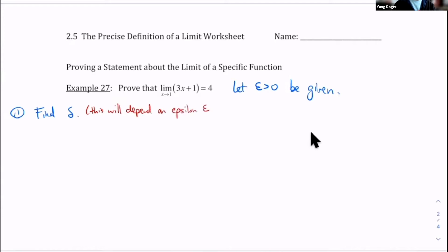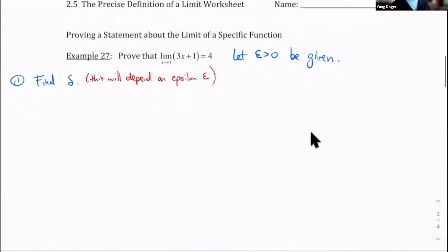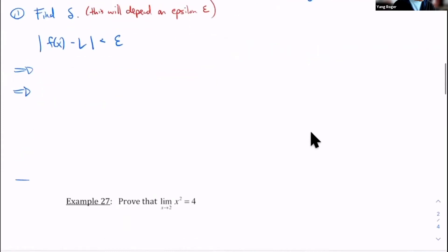So this is our strategy, my friends. We're going to start off with the closeness of the y part first. So we're going to start off with this absolute value of f of x minus L is less than epsilon. Then we're going to do a whole bunch of algebra. And at the end, our hope is that we're going to end up with x minus a is less than delta. And then whatever this expression is right here, that's what I'm going to choose my delta to be.